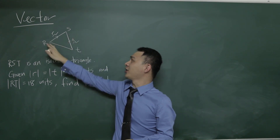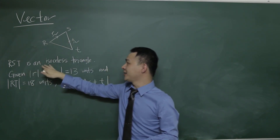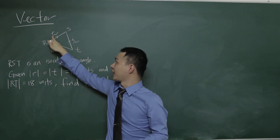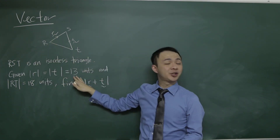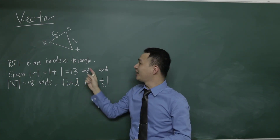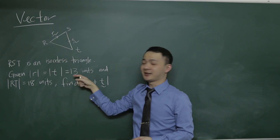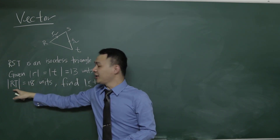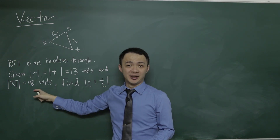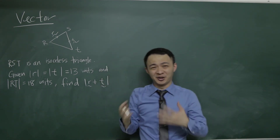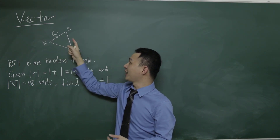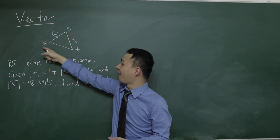You have a triangle called RST, which is an isosceles triangle. The vectors R and T — the modulus means the magnitude, which is the length — so the length of SR and ST is 13 units, and the length of RT is 18 units. In vectors, length basically means magnitude: magnitude for RT is 18 and magnitude for ST and SR is 13.